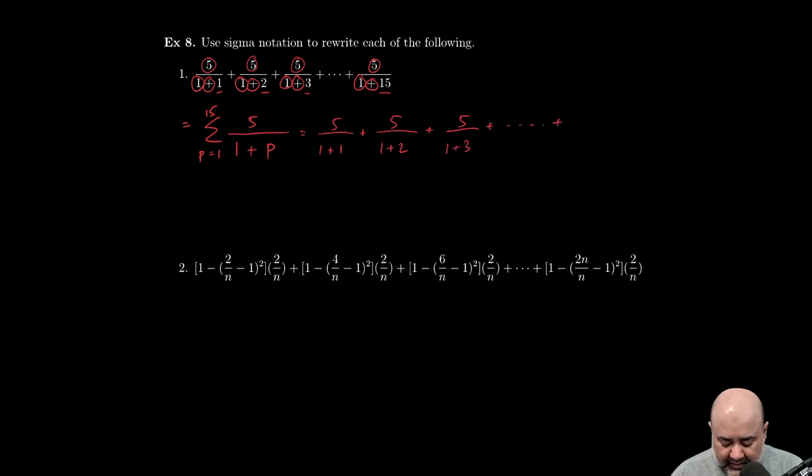And so on until my counter gets to 15, which will be 5 over 1 plus 15. So sanity check works, that the formula actually does give me what I started with.